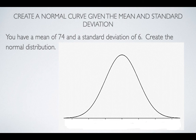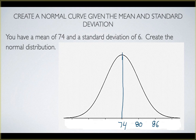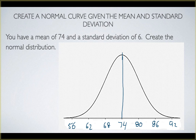Finally, given a mean and standard deviation, we can create a normal curve sketch. With a mean of 74 and standard deviation of 6, we place 74 in the middle. Going up by 6 each step: 80, 86, 92. Going down by 6 each step: 68, 62, 56. This is a rough sketch of what the normal distribution looks like. You identify where the mean goes, and where the first, second, and third standard deviations fall on both sides of the mean.